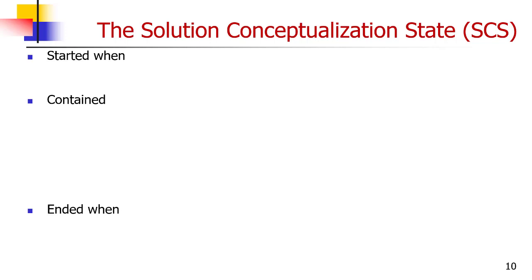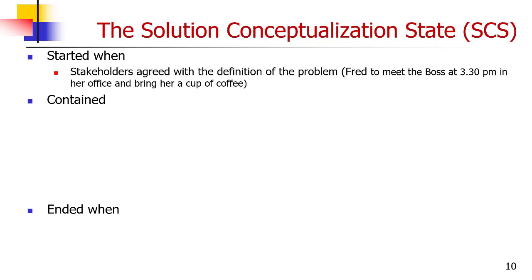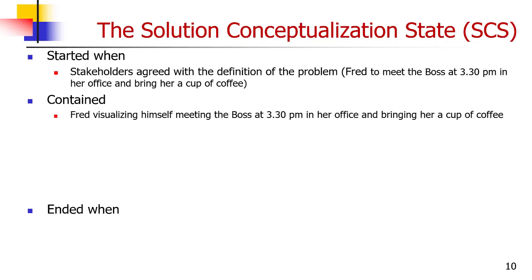Here's another example of the template structure: started when, contained, ended when. The solution conceptualization state started when the stakeholders agree with the definition of the problem. It contained Fred visualizing himself meeting the boss at 3:30pm in her office and bringing a cup of coffee. Notice that I'm carrying the wording through all the way — I'm not paraphrasing it, not using synonyms. Taking the wording all the way through minimizes the introduction of errors. In this simple case it's a little boring, but in a complex case there'd be a lot of other information in between, so it wouldn't appear as boring.